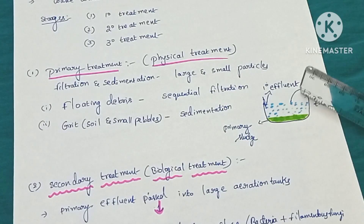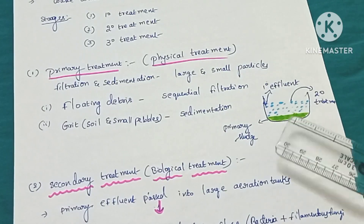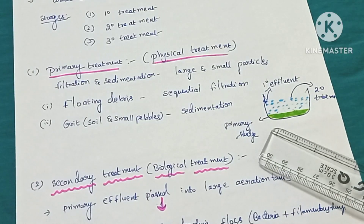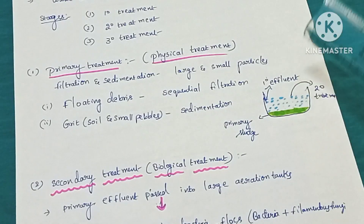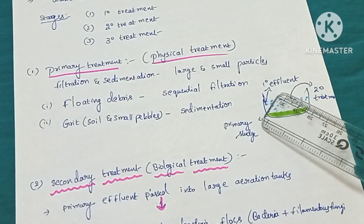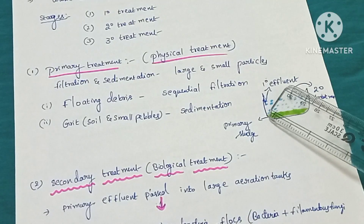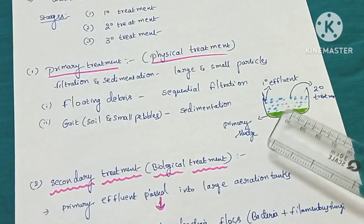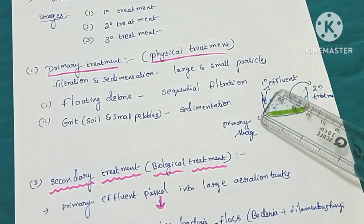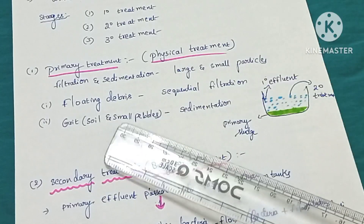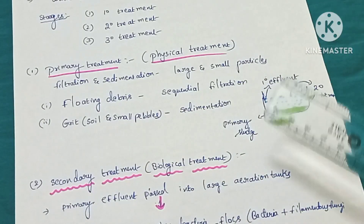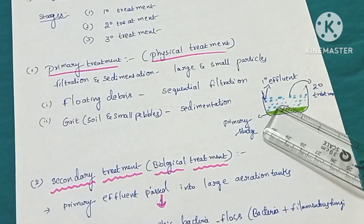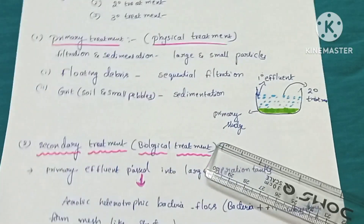After settling, the low-level solids at the bottom are called primary sludge. The clear liquid present at the top is called primary effluent. The primary effluent is then taken for secondary treatment, while the solid matter — the primary sludge — remains. This completes primary treatment.